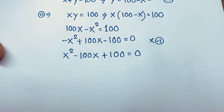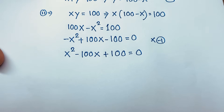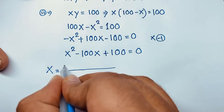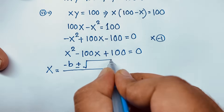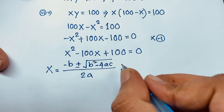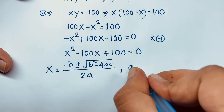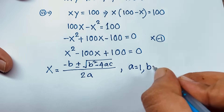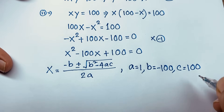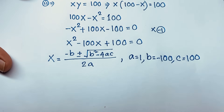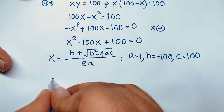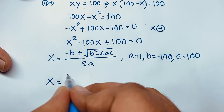Now x equals what? How to simplify this equation? At this moment we can use the quadratic formula: x equals negative b plus or minus square root of b squared minus 4ac, all over 2a. Here a is equal to 1, b is equal to negative 100, and c is equal to positive 100. Now we put these values into the expression.